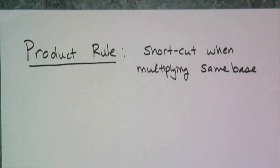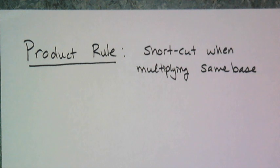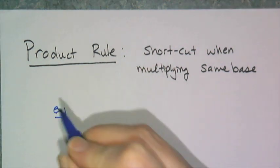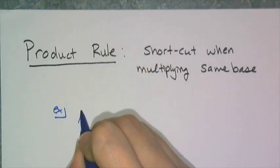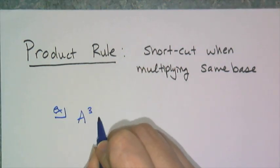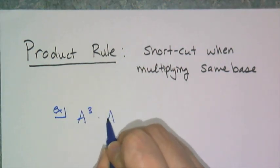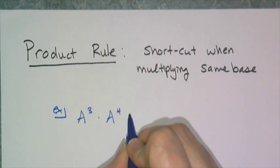I'm going to show you by definition what you're supposed to do, and I want you to see what I'm actually doing and see if you can figure out the shortcut before I actually give it to you. For example, if I have a to the third power times a to the fourth power.